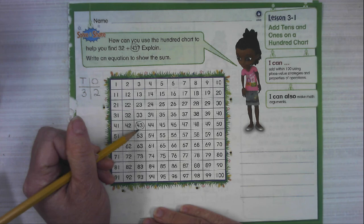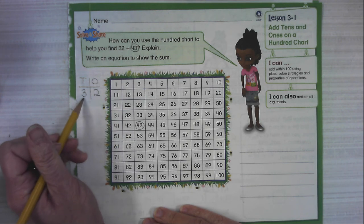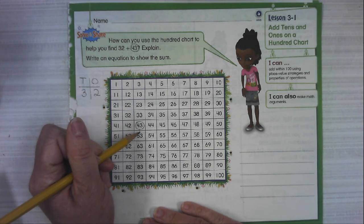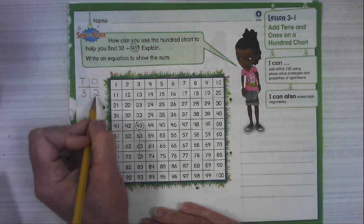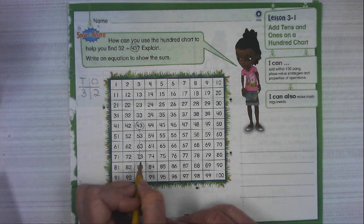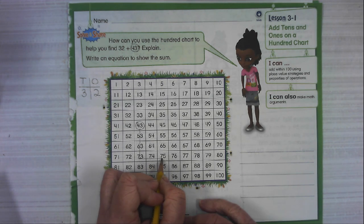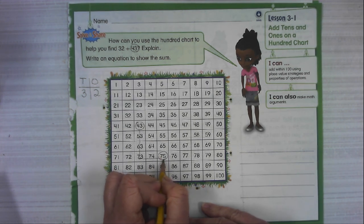So 32 is three tens and two ones. So I know that I need to move up three tens, one ten, two tens, three tens, and I need to go over two ones. One, two, and that takes me to 75.